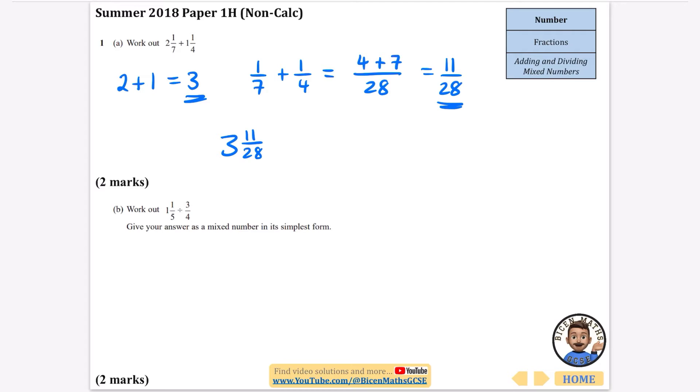This time we're doing a division. I'm going to begin by converting 1 and 1/5 from a mixed number to an improper fraction. You do this by doing the 1 times the 5 and then adding on the 1. One times 5 is 5, add on the 1 is 6. So it is 6/5. So my calculation is actually going to be doing 6/5 divided by 3/4.